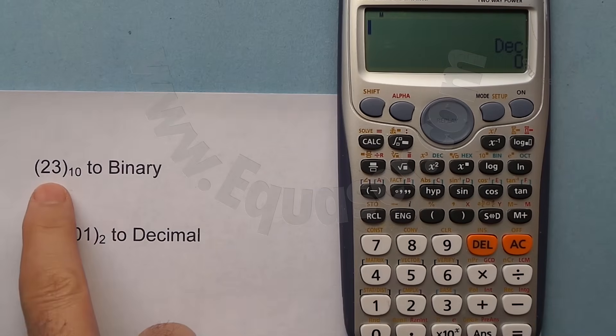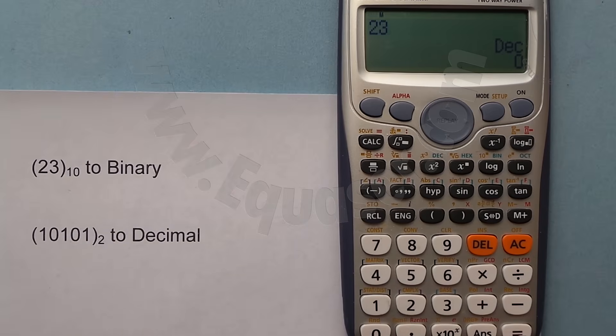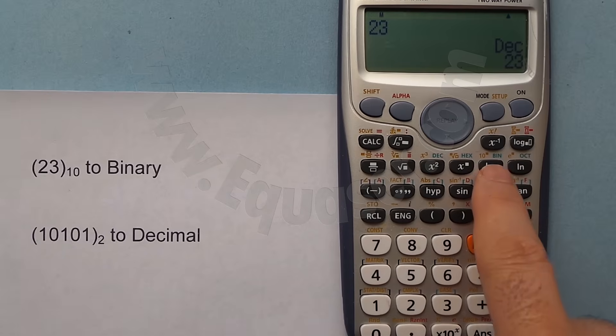So I enter 23. I press 2, 3, and then the equal sign. Now I have 23 on the screen. To convert it to binary, I press Bin—this button which is currently log, but when in base mode it's binary.